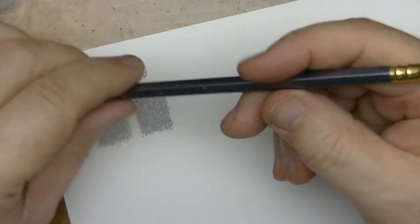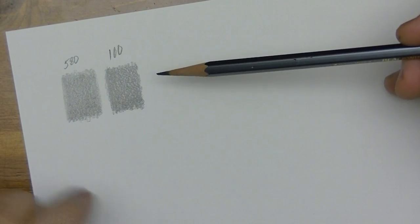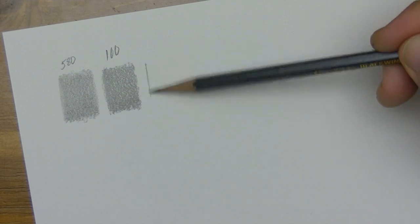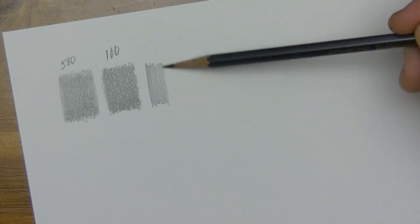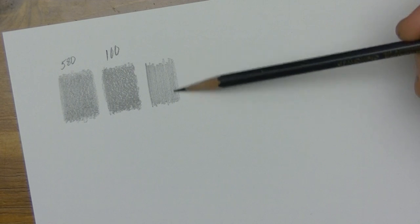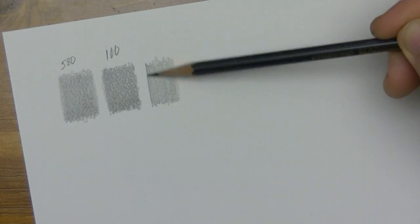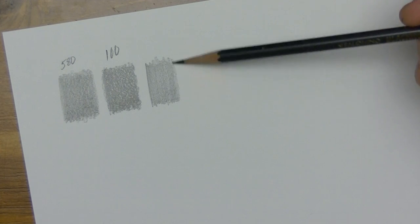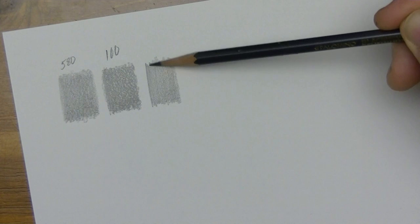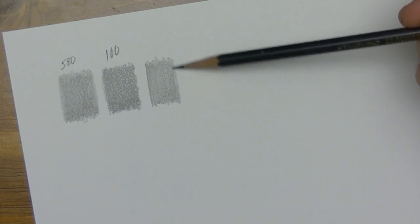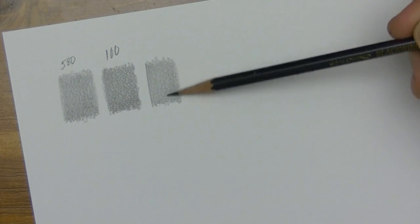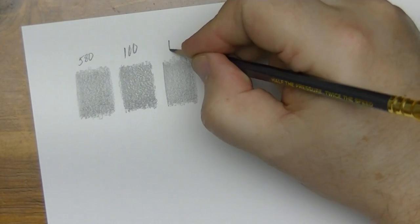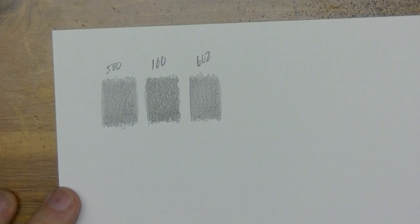And of course this is the luxury pencil. The Palomino Blackwing 602. And let's see how it falls in the realm of darkness here. So you have something to relate these pencils to. Okay so that's the 602 look at all these numbers here that's cool. Alright 602.